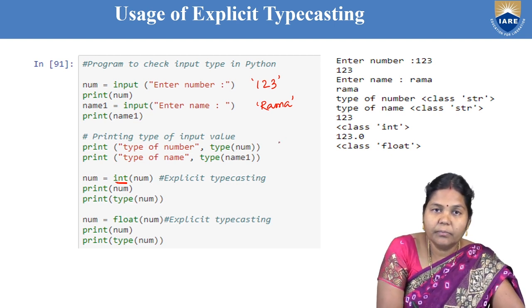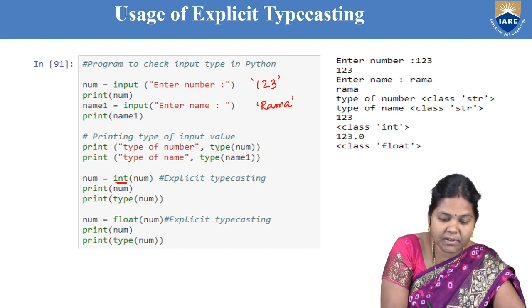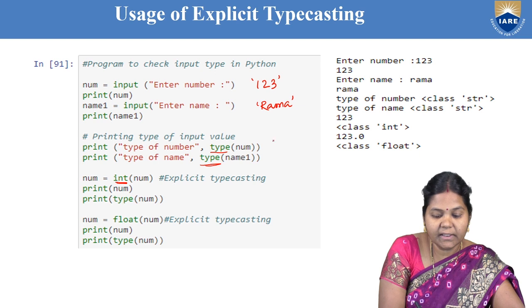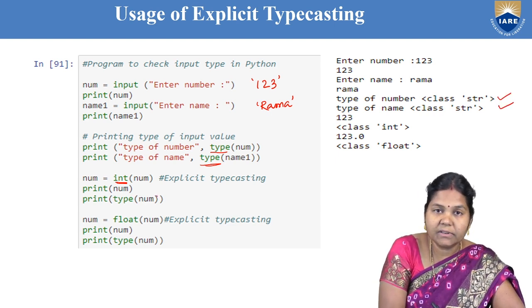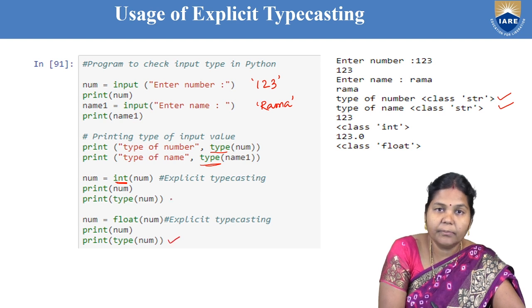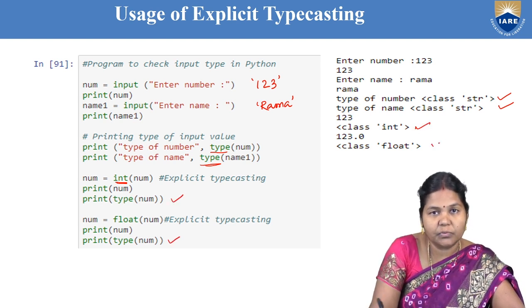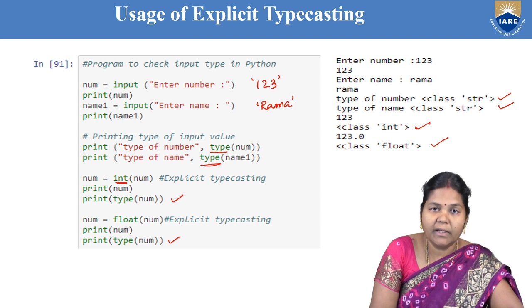If you want to check the type of a variable after reading input, you can use the type method. If you check the type of num and name, you will see they belong to the string class. After explicitly converting to integer or float, you can check again and you will see it has been converted to the integer class, float class, and so on. This is how explicit typecasting is used to convert input into your required format.